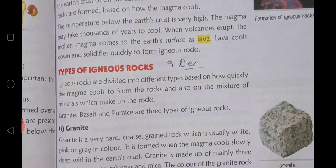Granite, basalt, and pumice are three types of igneous rock. First is granite, second is basalt, third is pumice.